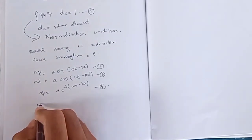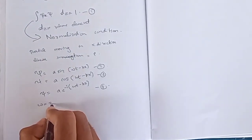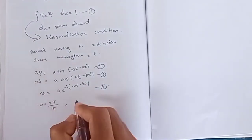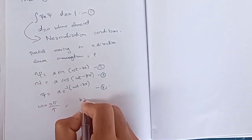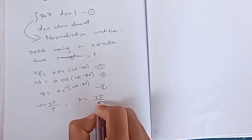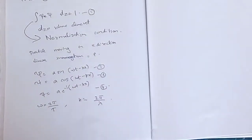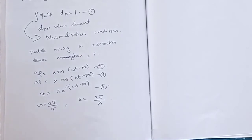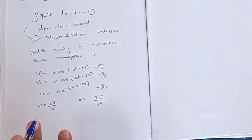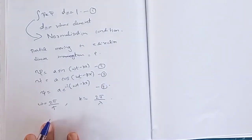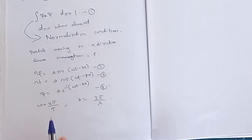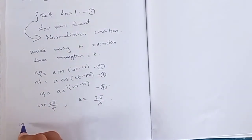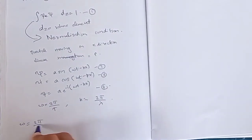Here, omega ω = 2π/T, and k = 2π/λ. Omega is equal to 2π/T.